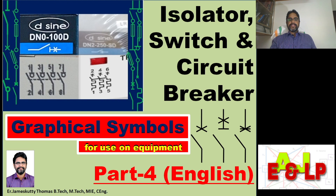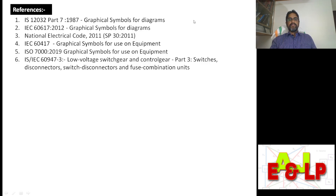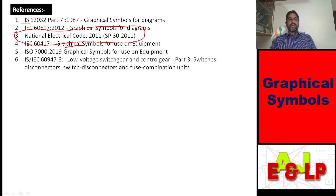The topic is Graphical Symbols for Use on Equipment. Here I am dealing with a circuit breaker. Please note these references: some IS and some IEC standards I am using, plus the National Electrical Code 2011. I am discussing Graphical Symbols for Use on Equipment — on the equipment alone I am focusing, but the references I am quoting cover other sections also, including Graphical Symbols for Diagrams.